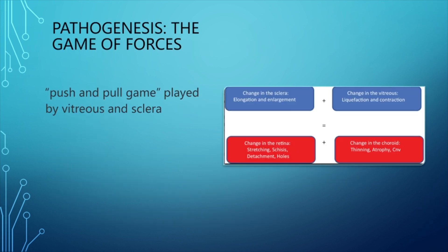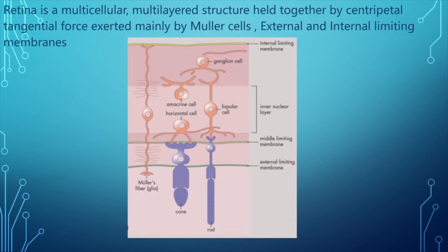It has been described as a push and pull game between the vitreous and the sclera. This push and pull game basically modifies the retina and leads to different clinical pictures such as schisis, detachments, and holes.